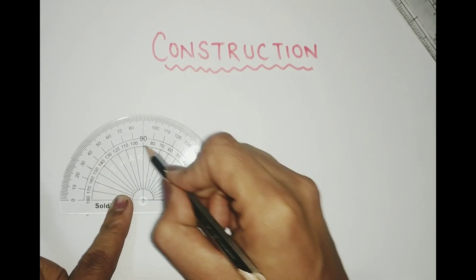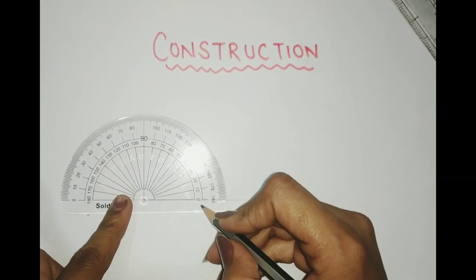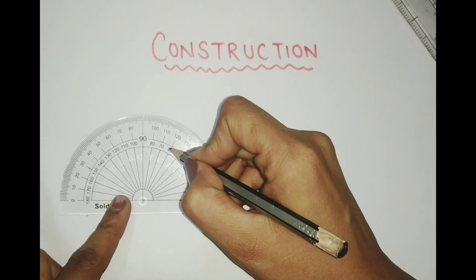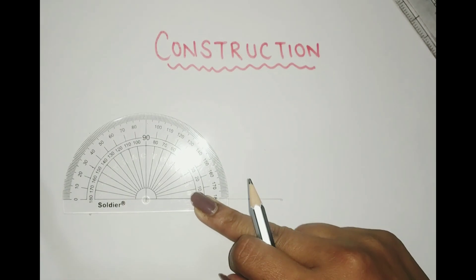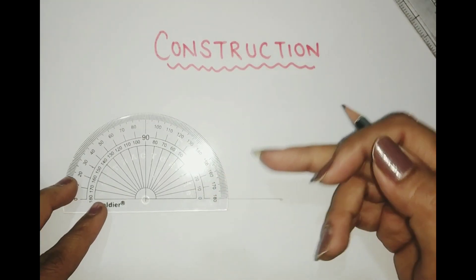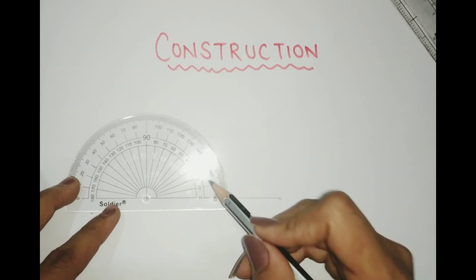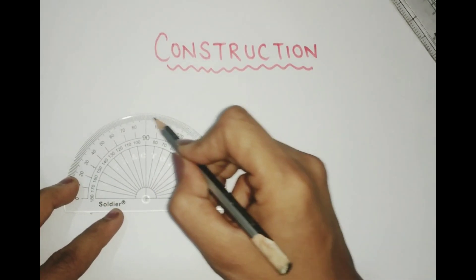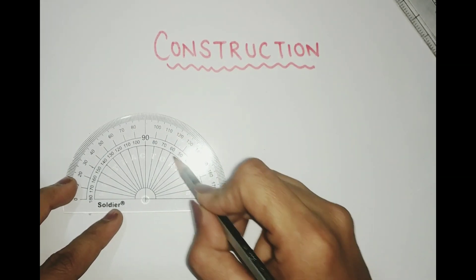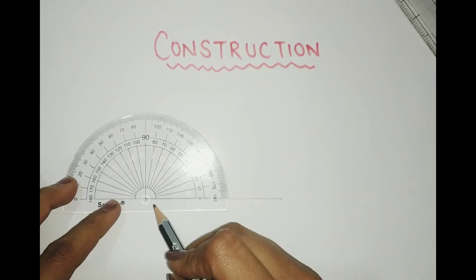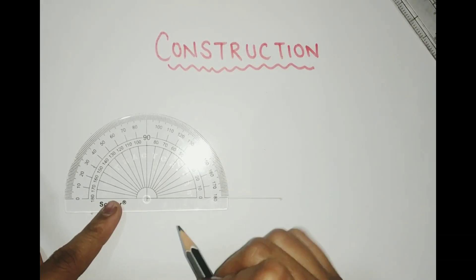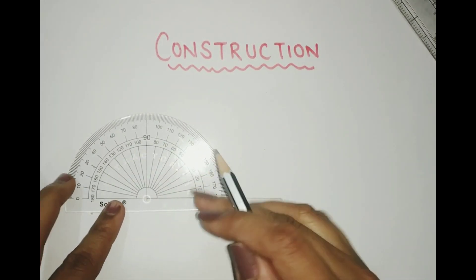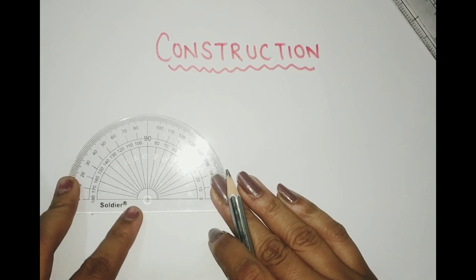When you put your protractor at one end, you have to read the interior angles — that means the angles written on the inside. This is 0, 10, 20, 30, 40, 50, 60, 70, 80, 90, and then 180. If someone asks you to draw 40 degrees with the protractor, you look for where 40 is on the interior angles, because you're keeping the protractor on the right side here.